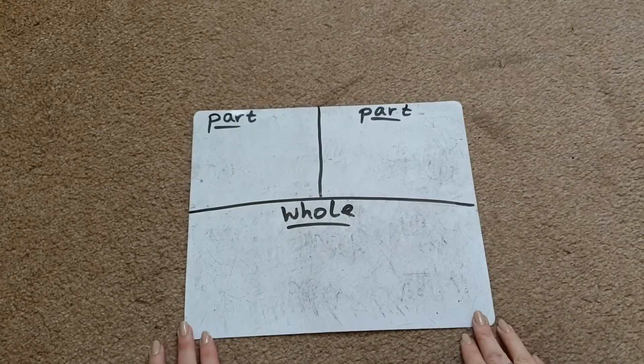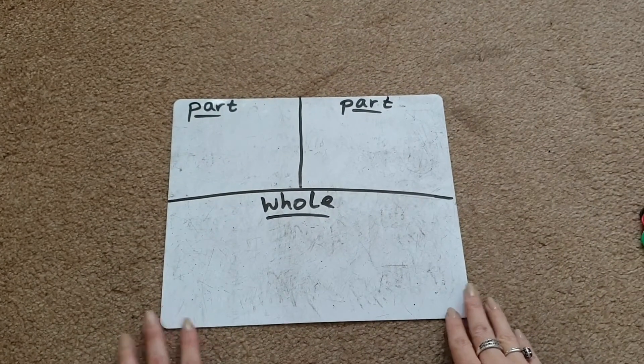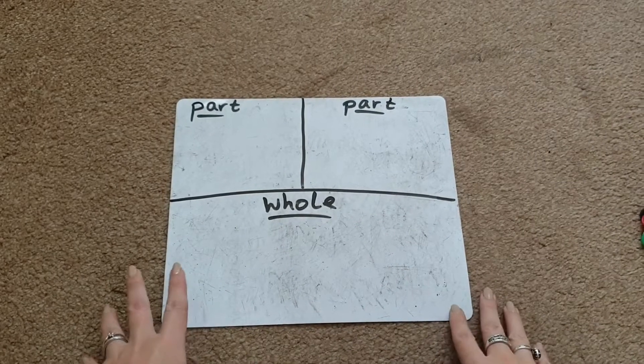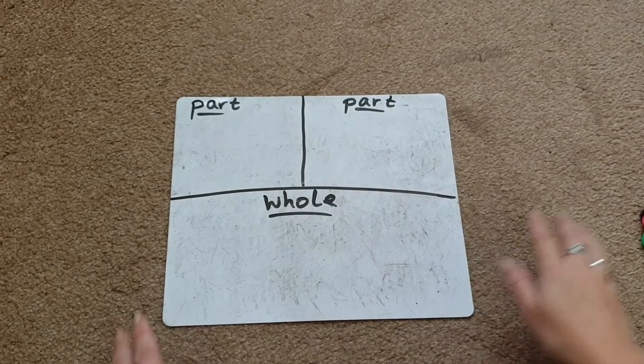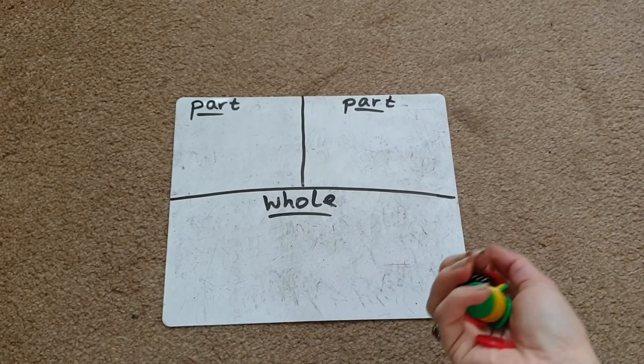Today we're looking at subtraction using a part-part-whole board. There are lots of different ways you can use part-part-whole boards to help teach subtraction. A really good way is to use concrete materials first, like counters.